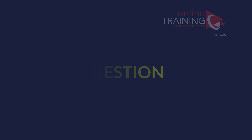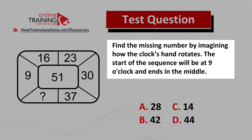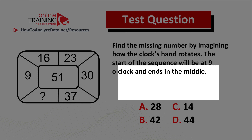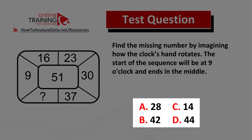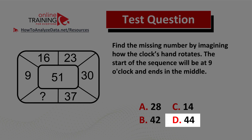Some of you might find this question tricky, but you will be excited to learn the solution to this real-life assessment test question. Find the missing number by imagining how the clock's handle rotates. The start of the sequence will be at nine o'clock and it ends in the middle. Choice A: 28. Choice B: 42. Choice C: 14. Choice D: 44.